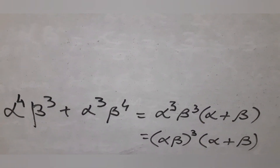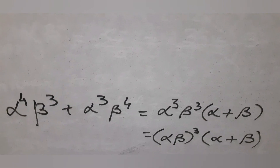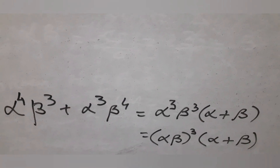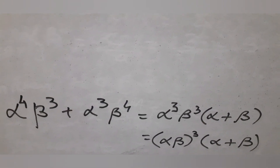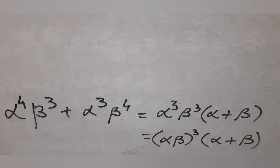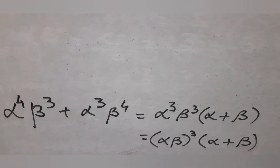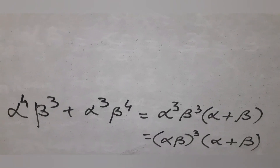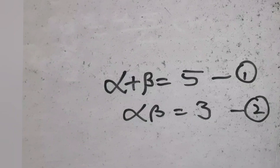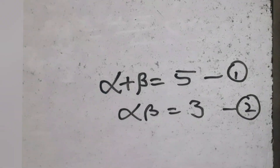For the given expression, take the common factor alpha cube beta cube and write everything in terms of the product alpha beta and alpha plus beta. Use the values alpha plus beta equal to 5 and alpha beta equal to 3.